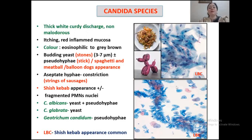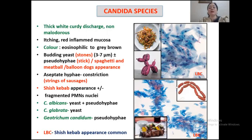The hyphae are aseptate and show constriction, giving a resemblance to strings of sausages. In LBC smears, squamous epithelial cells are arranged in a linear array threaded by pseudo-hyphae, and they can be seen in the form of a roulette, giving an appearance of shish kebab. The most common species is Candida albicans, which can be seen in both yeast and pseudo-hyphae form.